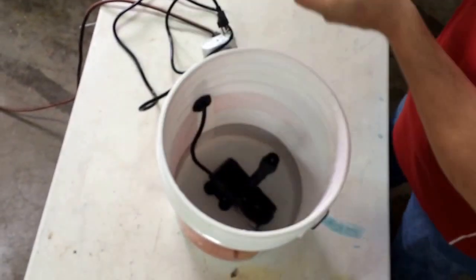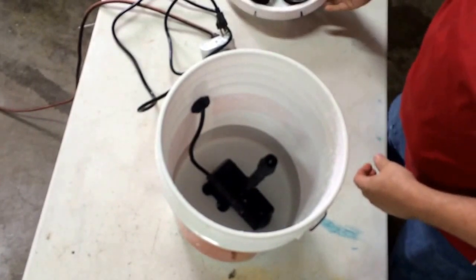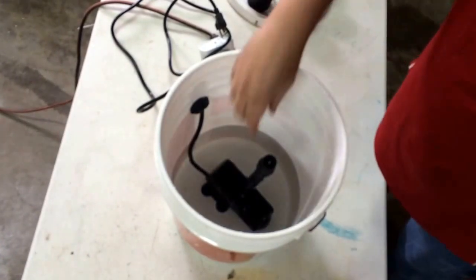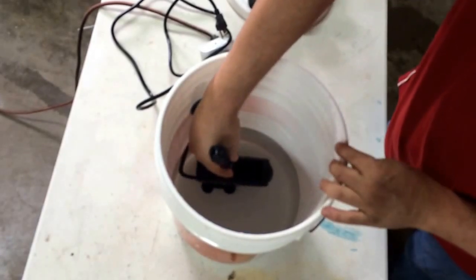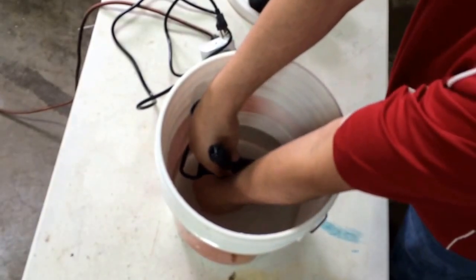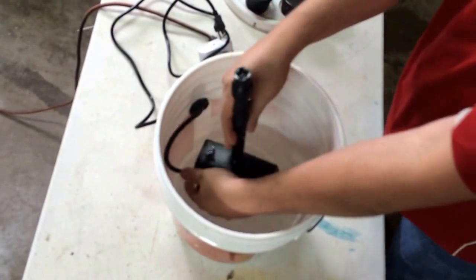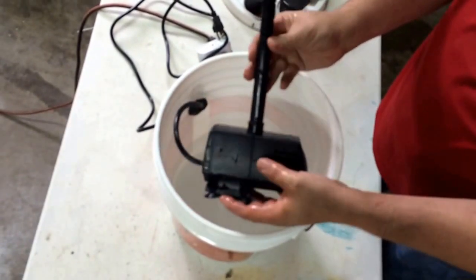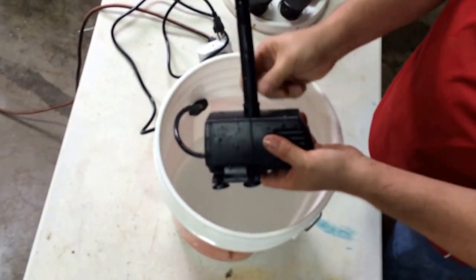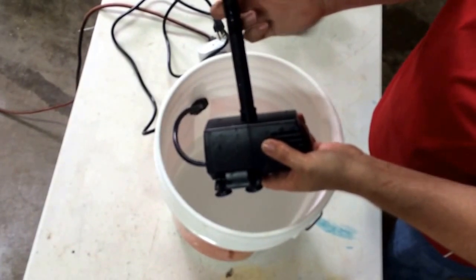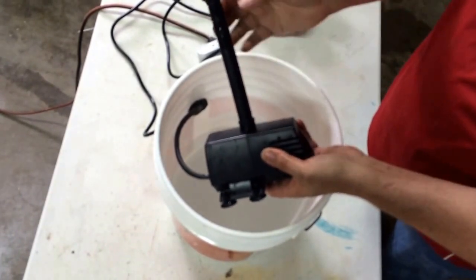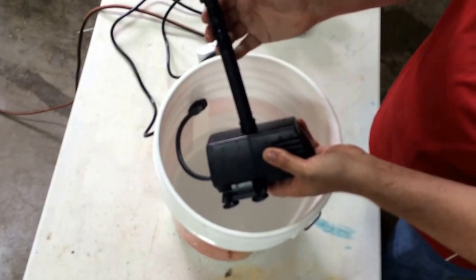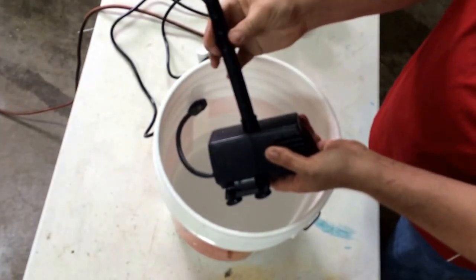All right, so inside I've got a submersible pump and some water of course and a riser and a sprinkler head. So I bought a long section with an adapter here so that I could cut it so that it would fit in the bucket. I believe this was 12 inches when I started measuring it.